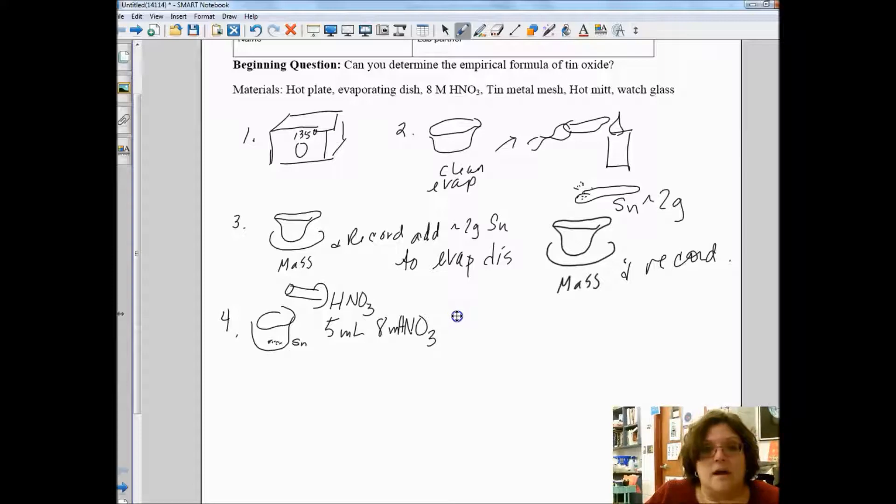Step five, my thought is we will do steps one through four on one day and then leave it overnight. Then start step five the next morning. We'll heat the evaporating dish on a hot plate, and you're going to heat it for five minutes.